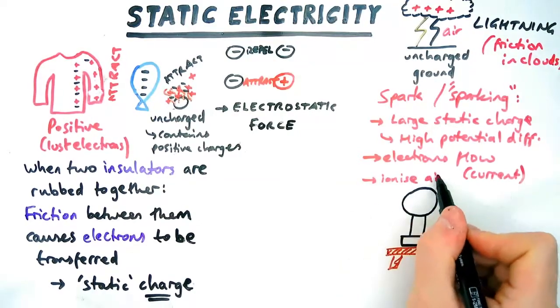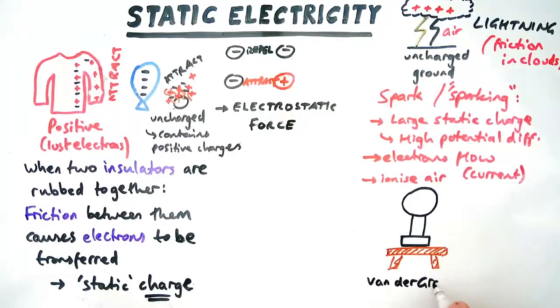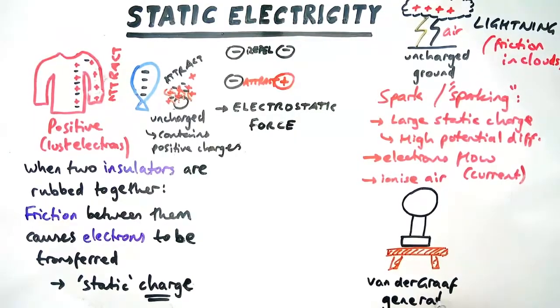Now, air isn't a good conductor. So they actually ionize the air to kind of make it into a good conductor. So it can flow even through an insulator.